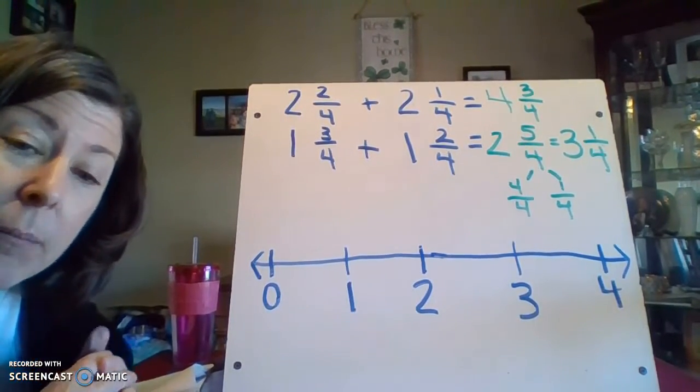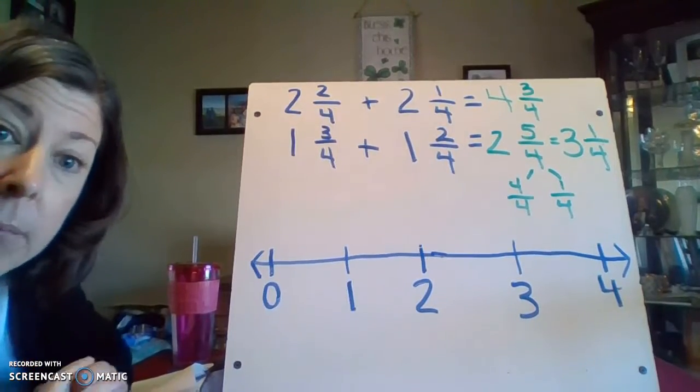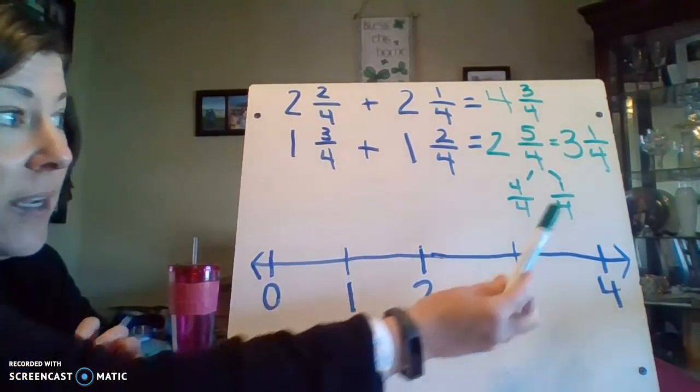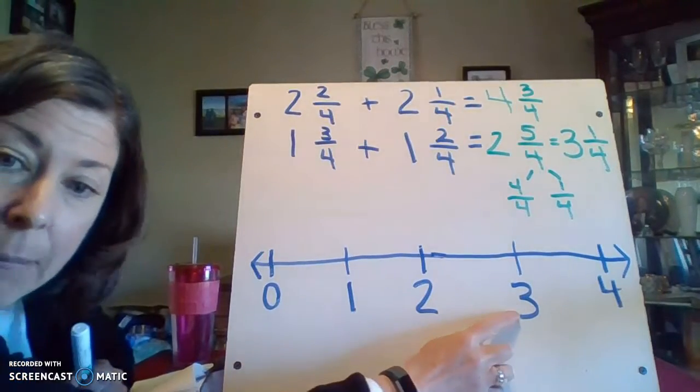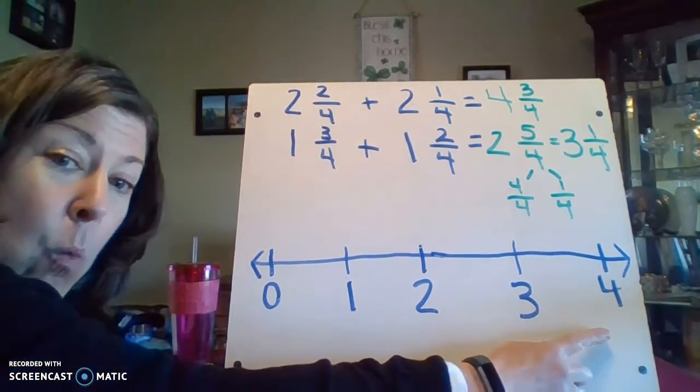So I arranged my number line from zero to four because I knew that the answer, since it was three and one-fourth, I couldn't stop at three. I had to go one more whole.